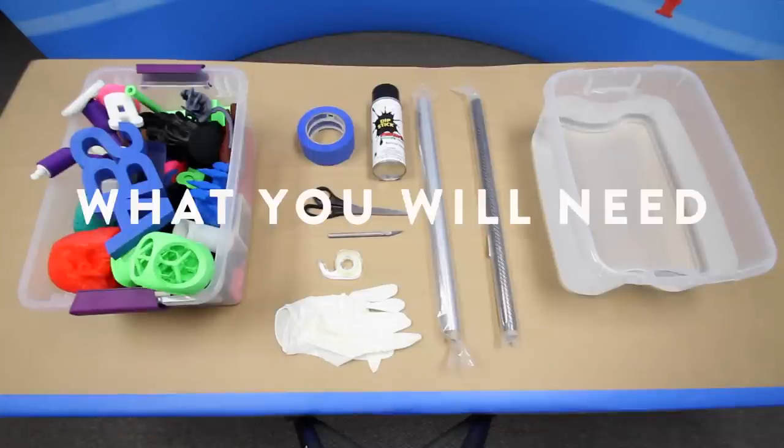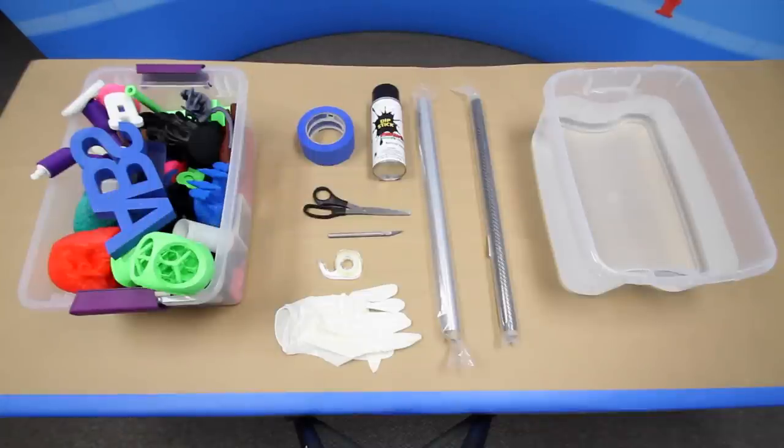For this you're going to need your printed object, the hydrographic film and activator spray, scissors or a knife, masking tape, rubber gloves, double-sided tape, and a bin with some water.